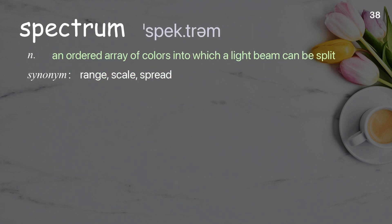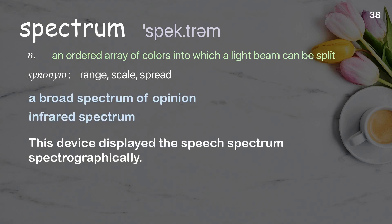Spectrum: An ordered array of colors into which a light beam can be split. Examples: A broad spectrum of opinion, infrared spectrum. This device displayed the speech spectrum spectrographically.